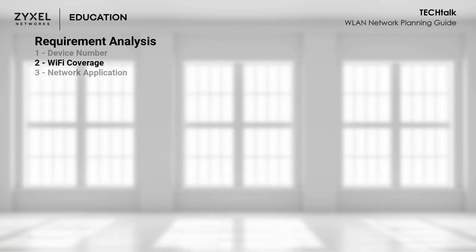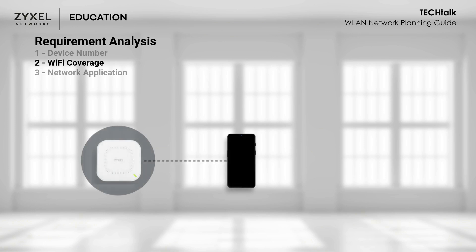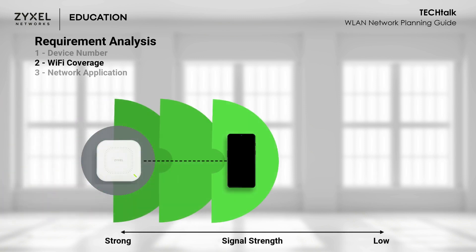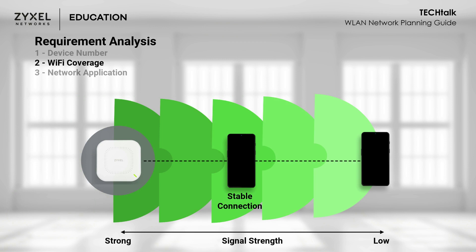Some people may wonder why signal strength matters. As you are using a smartphone to watch Netflix or browse the internet, your device is also communicating with the AP. If the device is close to the AP, the signal is strong and the connection is very stable. On the other hand, if the station is far from the AP, the signal may be too low and result in interrupted service.